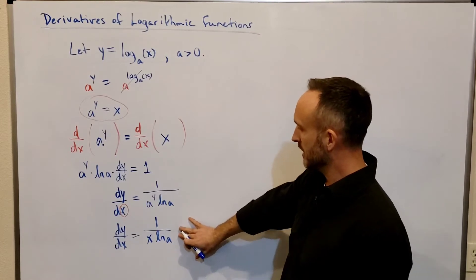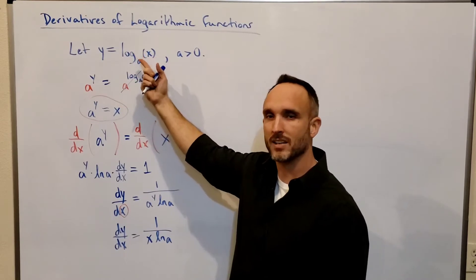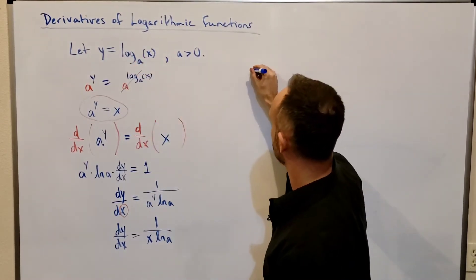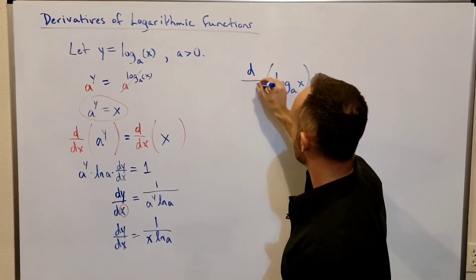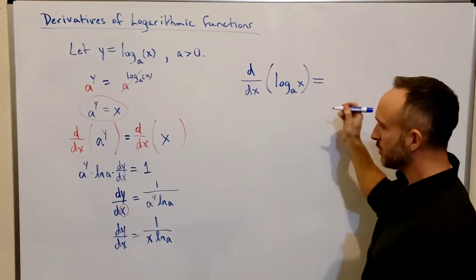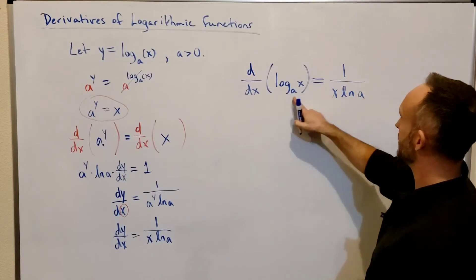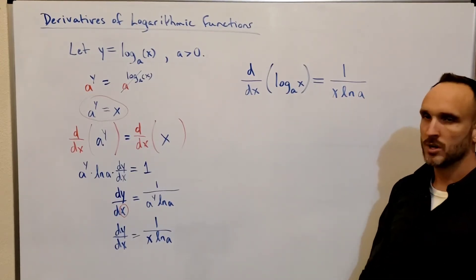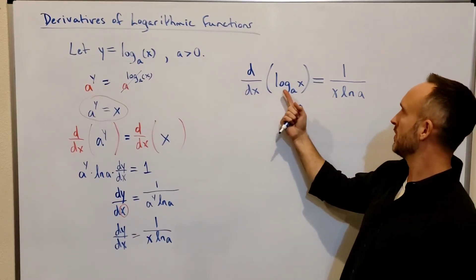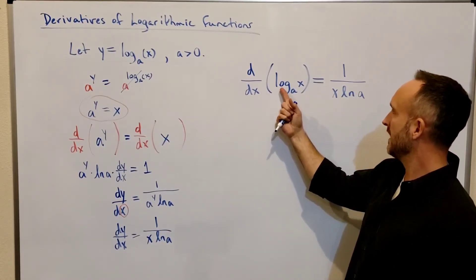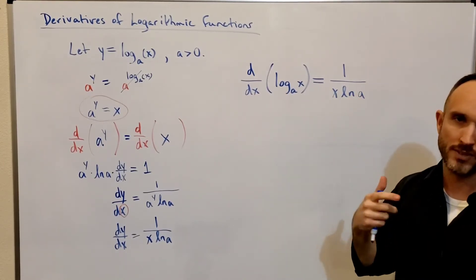So the conclusion is that the derivative of y — which is log base a of x — with respect to x equals 1 over x times the natural log of the base a. You get this interesting result where the derivative of a log contains a natural log of the base in the denominator.